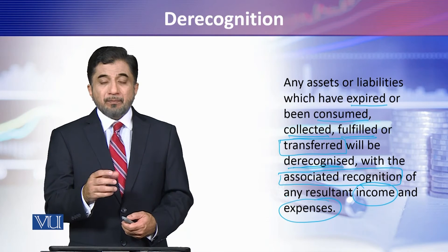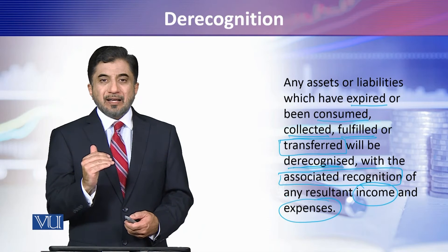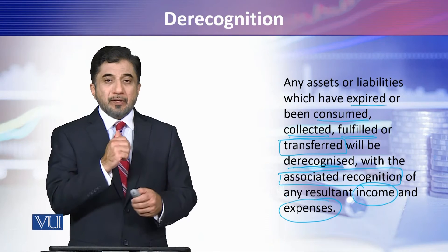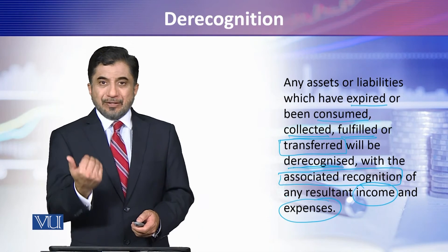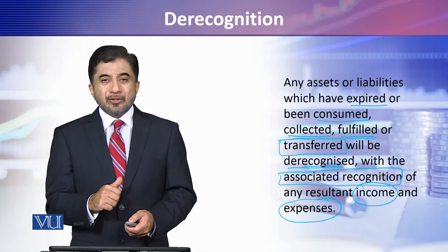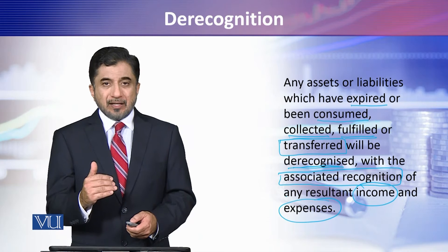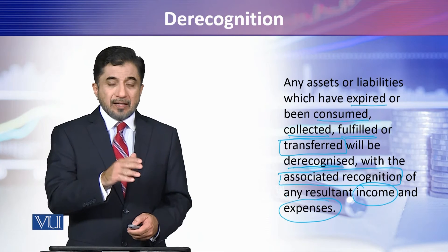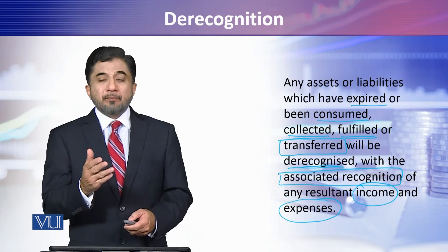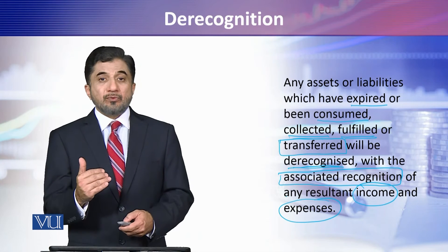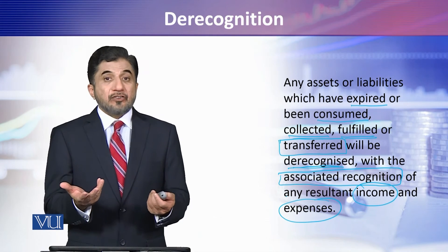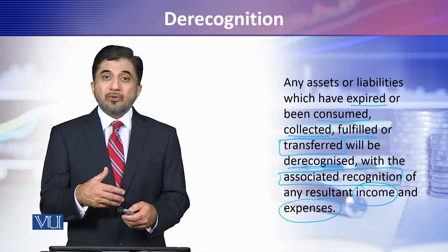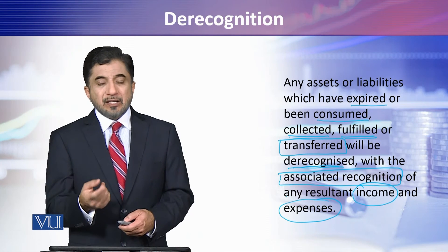Another example: inventory whose net realizable value is lower than cost. Cost was 100,000 rupees and net realizable value is 75,000 rupees, so 25,000 rupees is written down. You write down inventory to its net realizable value, recognizing a 25,000 rupee loss as an expense in cost of goods sold, while de-recognizing that portion of inventory. Sometimes an asset is simply transferred — for example, a receivable collected in cash means one asset is de-recognized and cash (another asset) is recognized.